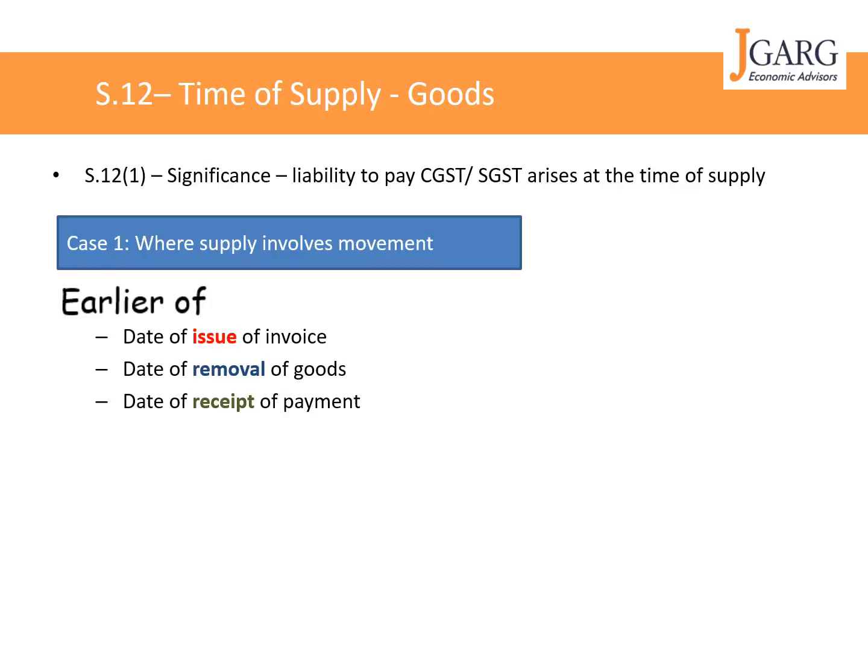For example, if you have a shop in Delhi and your customer is in Haryana, and the customer requires you to deliver goods to Haryana, then the date of removal of goods becomes important. However, if the customer says they are not in town next week but asks you to raise an invoice and they will make the payment before you remove the goods, then the date of invoice becomes important because it is earlier than the removal date or receipt of payment.